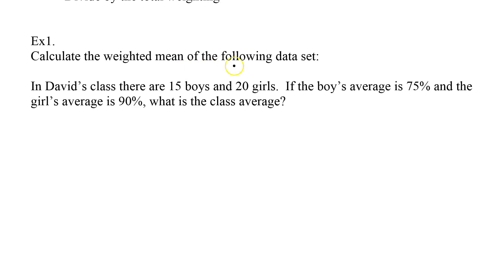Calculate the weighted mean for the following data set. In David's class there are 15 boys. Well that's a count. And 20 girls. So here we have my weights. 15 boys and 20 girls. The boys average is 75%. And the girls average is 90%. So what most people would think to do is just simply take my two averages, add them up, and divide by two. But of course that's incorrect. The girls are more important because they have more than the boys in this case. So the girls average of 90 is going to be worth more than the boys average of 70%.